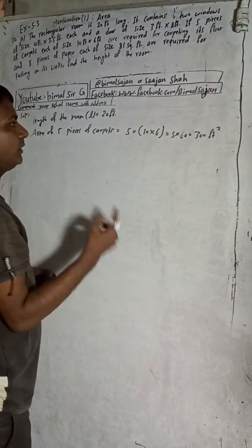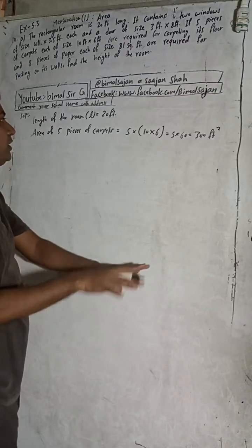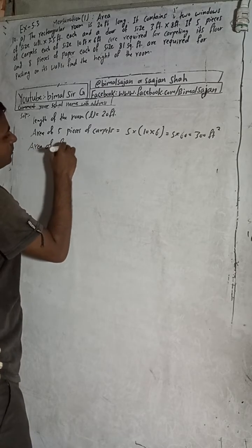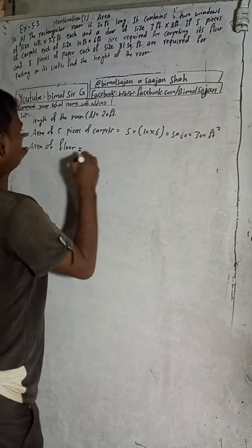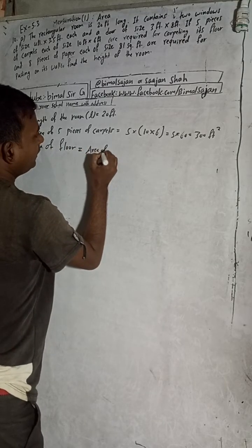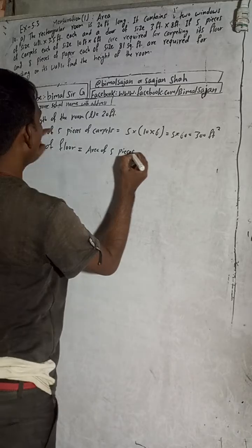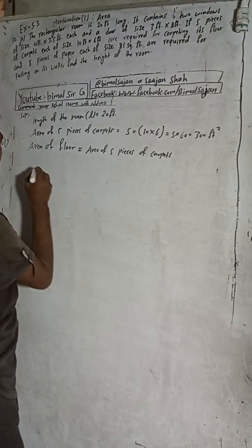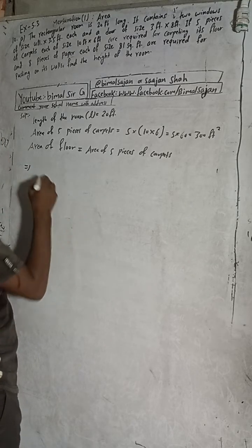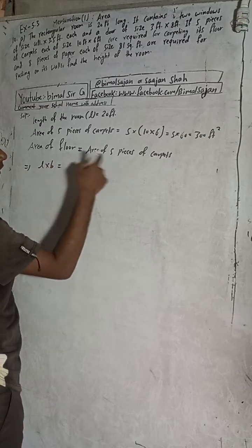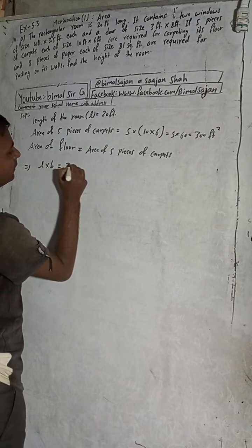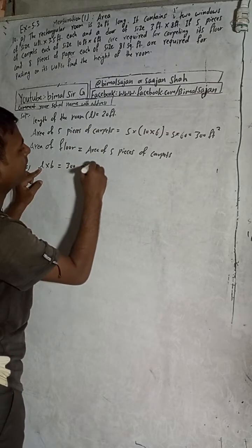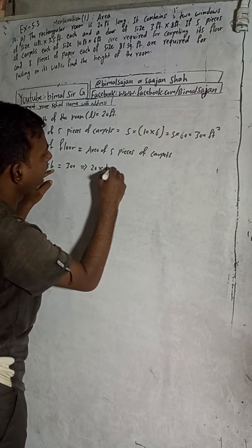These carpets are used on the floor, so we get the area of the floor. The area of the floor equals the area of five pieces of carpets. The formula for area of floor is L × B, which equals 300 square feet. The length is given as 20 feet, so 20 × B = 300.